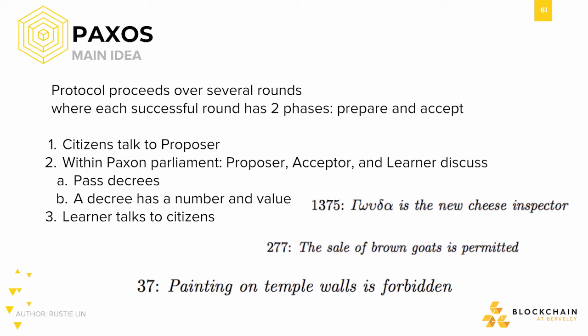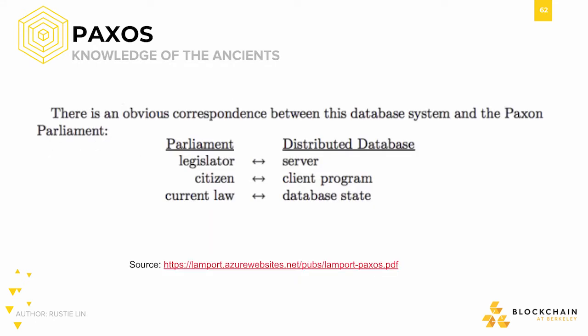After a decree is proposed within the parliament, the acceptors discuss. If at any point in time a quorum or majority of legislators are in the chambers and all vote yes, then the decree will be passed, and they'd all write it down on everyone's ledgers. After reaching consensus, the learners learn the result, and then let the entire island know what happened in parliament.